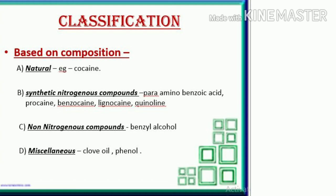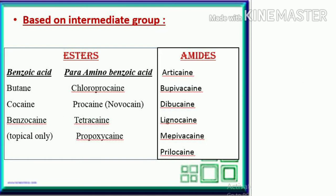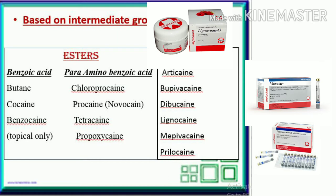Based on intermediate group — Esters: benzoic acid derivatives: butane, cocaine, benzocaine; para-amino benzoic acid derivatives: chloroprocaine, procaine, novocaine, tetracaine, propoxycaine. Amides: articaine, bupivacaine, dibucaine, lignocaine.